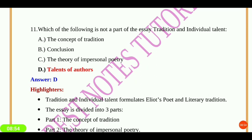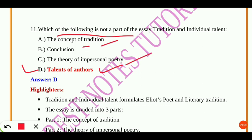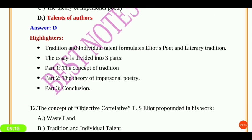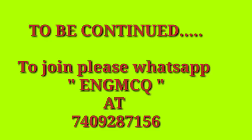Next question: which of the following is not a part of the essay 'Tradition and Individual Talent'? The answer is 'talents of author' — that is not part of it. The essay contains the concept of tradition, a conclusion, and the theory of impersonal poetry. The essay is divided into three parts: Part One contains the concept of tradition, and the essay formulates Eliot's poetic and literary tradition.